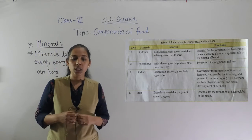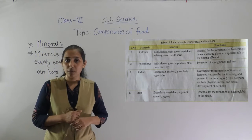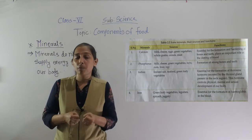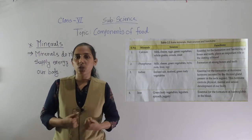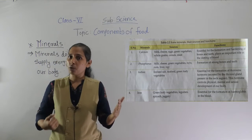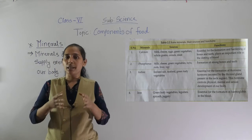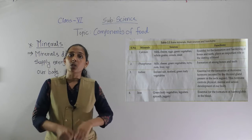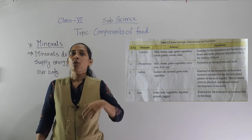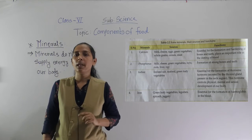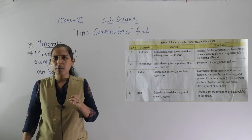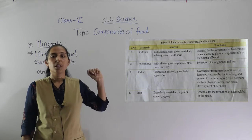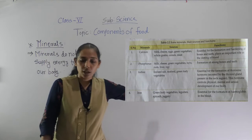Calcium also plays a vital role in the clotting of blood. Sometimes we get cuts on our body and blood starts to come out, but after a certain period of time the blood stops coming from the wound. This happens because the blood gets clotted there due to calcium. So calcium is very important for the clotting of blood.